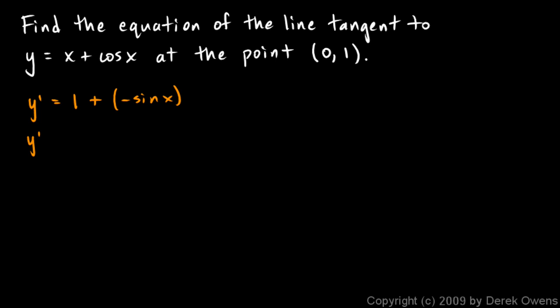And the derivative at an x value of 0, y prime of 0 would be 1 minus the sine of 0. And the sine of 0 is just 0. So this is simply 1. So this isn't hard. I have a point. And I'm given the point, 0, 1. And I have a slope. The slope is 1.